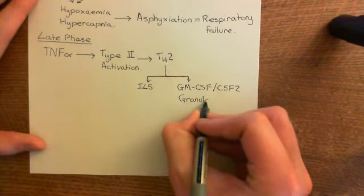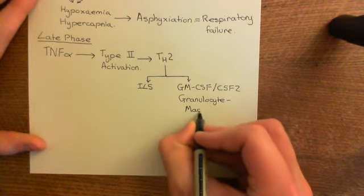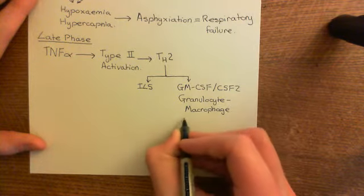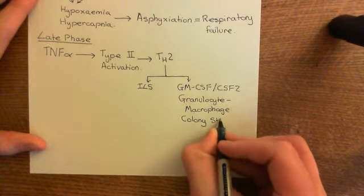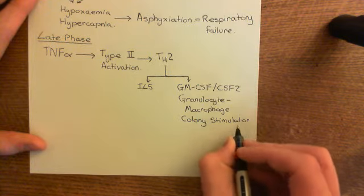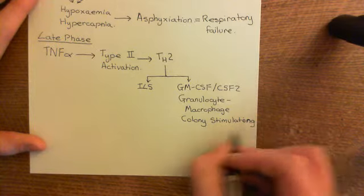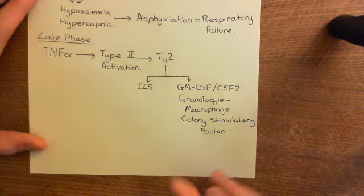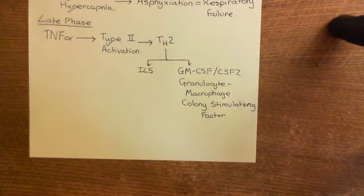GM-CSF stands for granulocyte-macrophage colony-stimulating factor — G for granulocyte, M for macrophage, CSF for colony-stimulating factor, not cerebrospinal fluid. It is also called colony-stimulating factor 2.